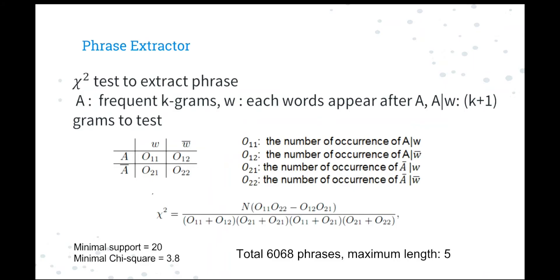We first use the chi-square test, a classic statistic-based phrase mining approach to extract the meaningful phrases. The chi-square is calculated in the following formula. If the frequency of k+1 grams is larger than 20 and the chi-square is larger than 3.8, we consider it as a reasonable phrase. In this way, we totally got 6,068 phrases with the maximum length as 5.